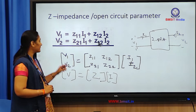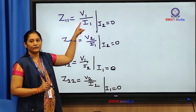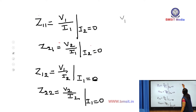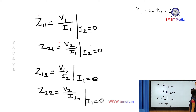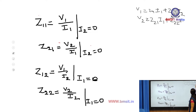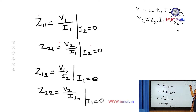Now let's see what each parameter represents. By open-circuiting the output port, I2 = 0. From the equations, Z11 = V1/I1 with I2 = 0, which is called the open-circuit driving-point input impedance. Similarly, Z21 = V2/I1 with I2 = 0, which is called the open-circuit forward transfer impedance.